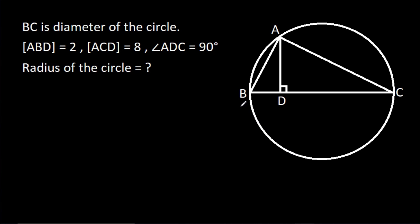In this video, we have been given that BC is the diameter of the circle, area of ABD is 2, area of ACD is 8, and angle ADC is 90 degrees. Then we have to find the radius of the circle.